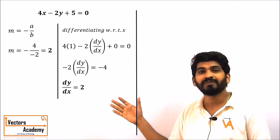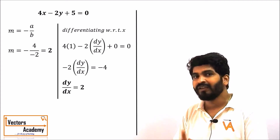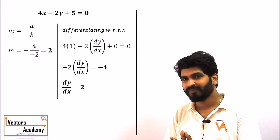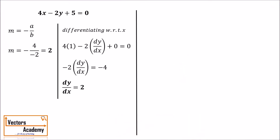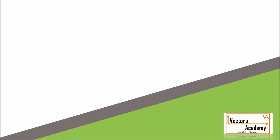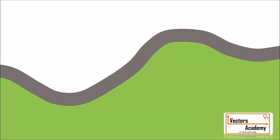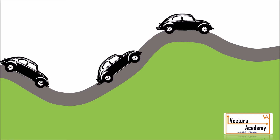The slope concept is straightforward for a straight line, but for a curve the slope keeps changing at each and every point. Imagine driving a car on a road climbing upward in a straight line — the angle with the horizontal remains constant, so the slope is constant and the derivative will be a constant. Now imagine driving on a curved road: at each position the angle made by the road with the horizontal changes, and hence the slope changes.